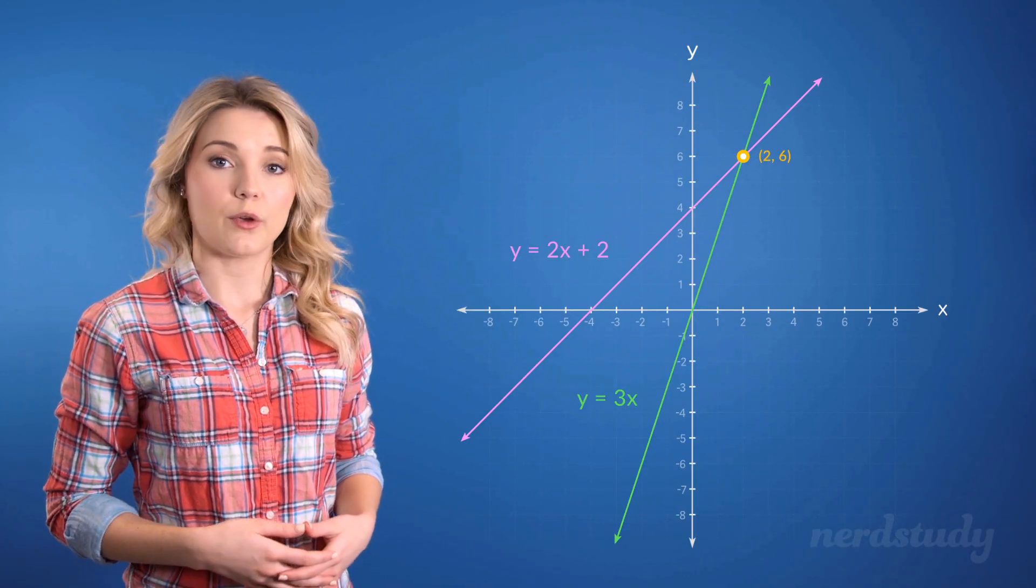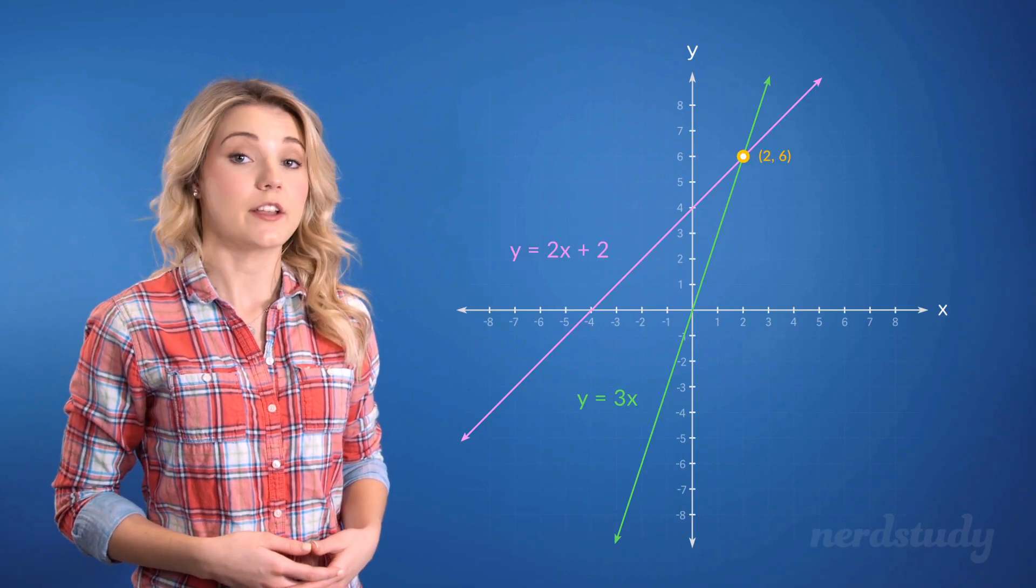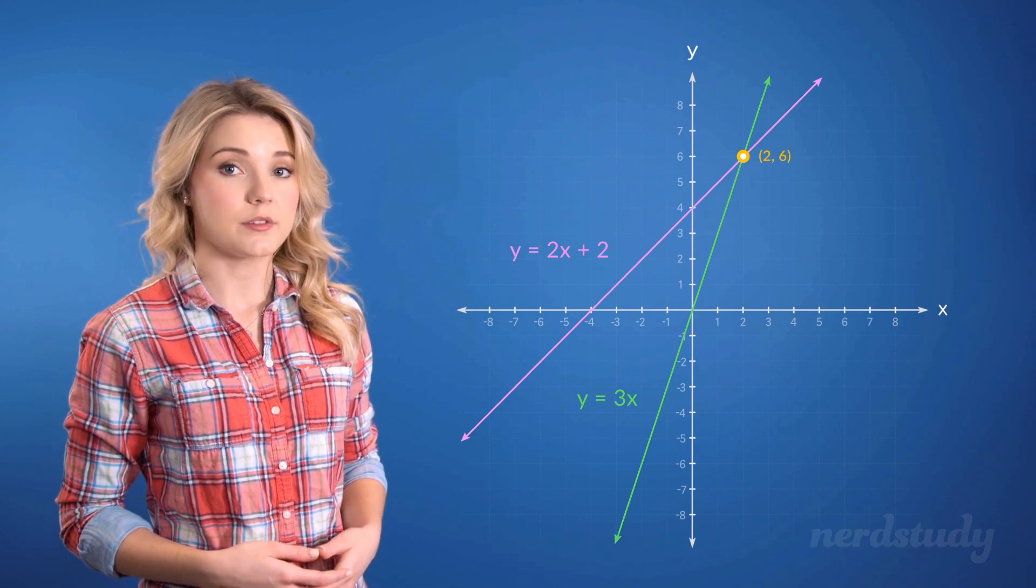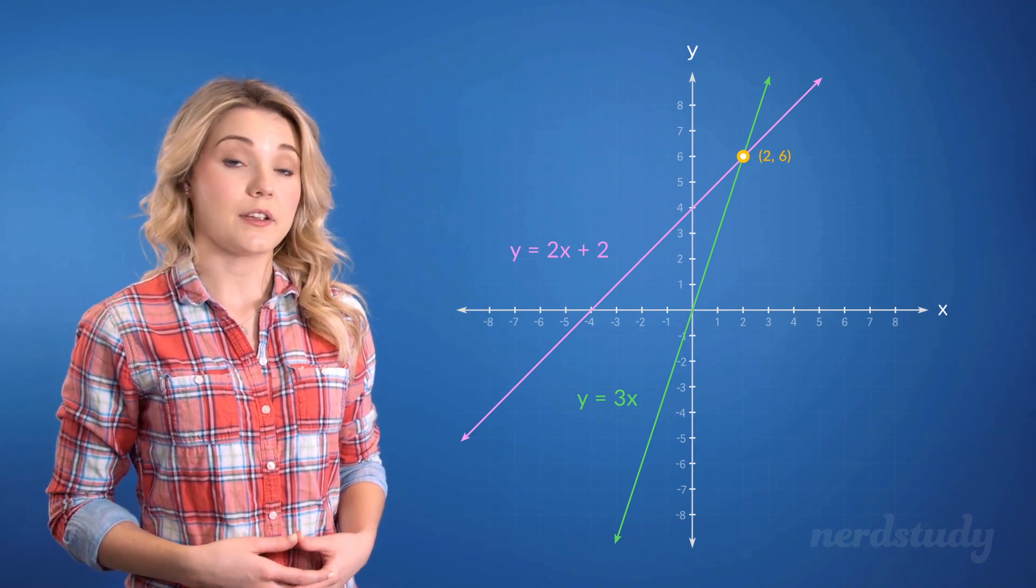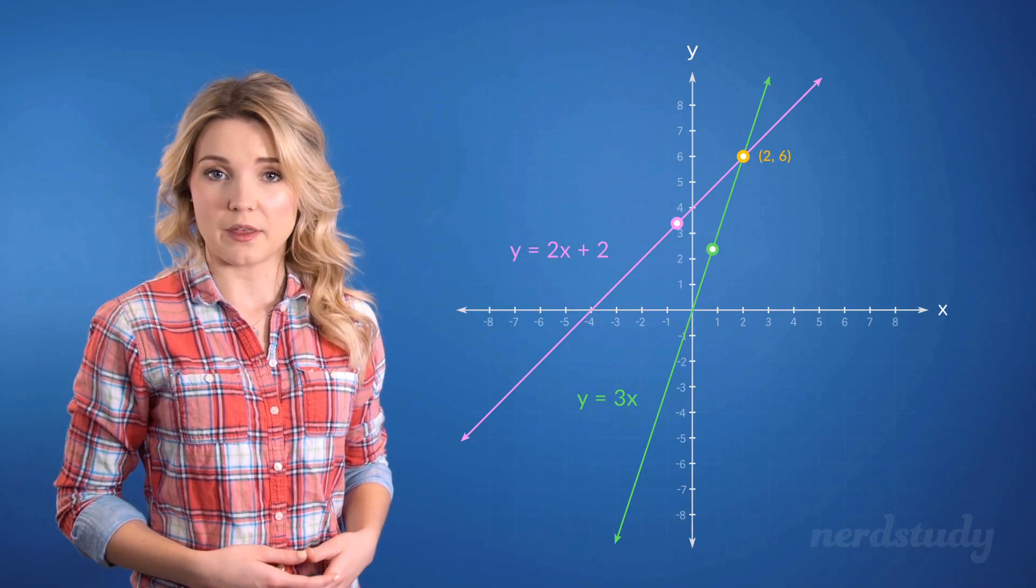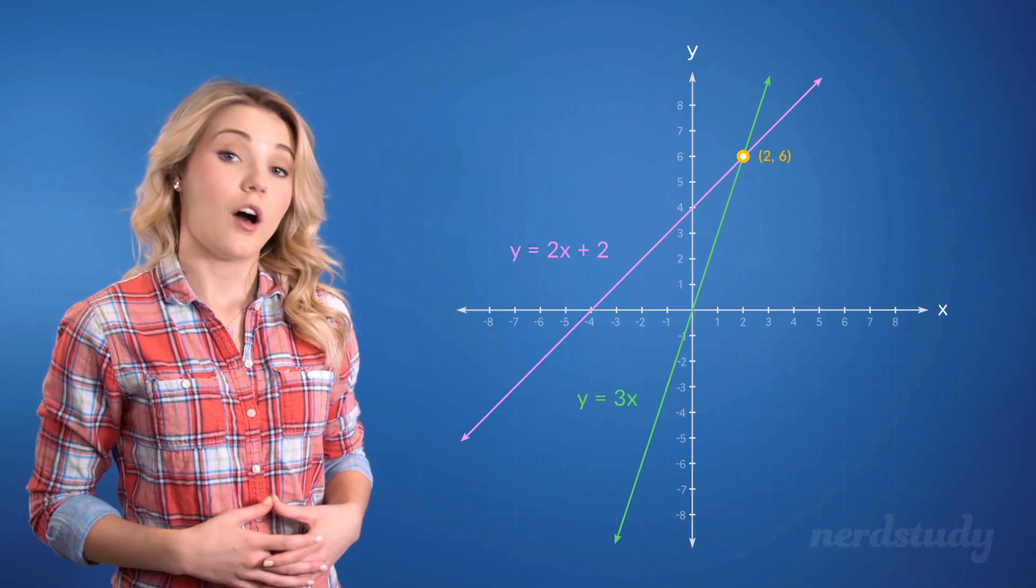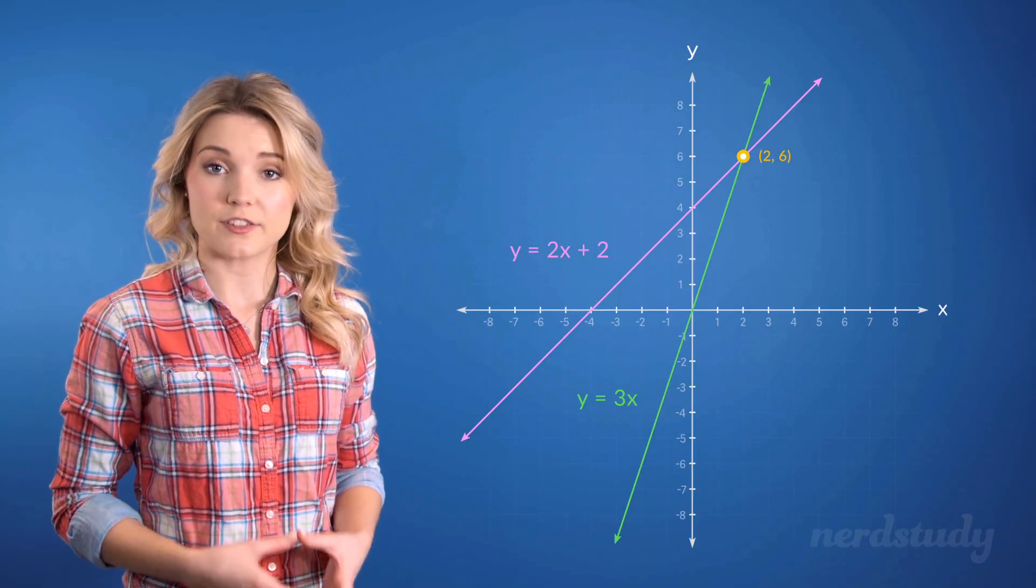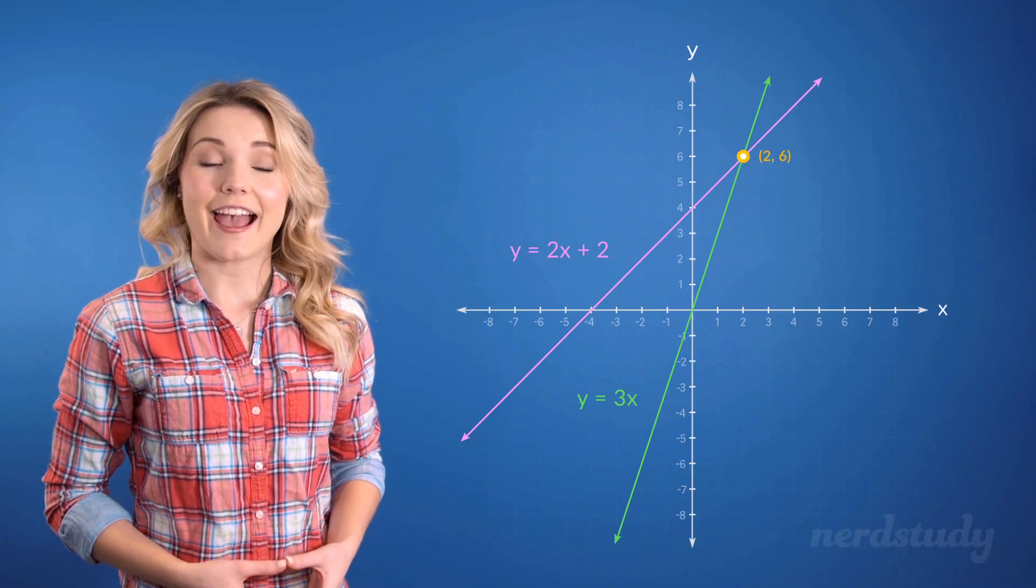And again, if we repeated this process of looking at a certain x and then inspecting the two different y values of the two different graphs, we'd realize that there is only one point shared between the two graphs. Alright, so now that we've got a strong concept of the point of intersection, let's take a look at an example together.